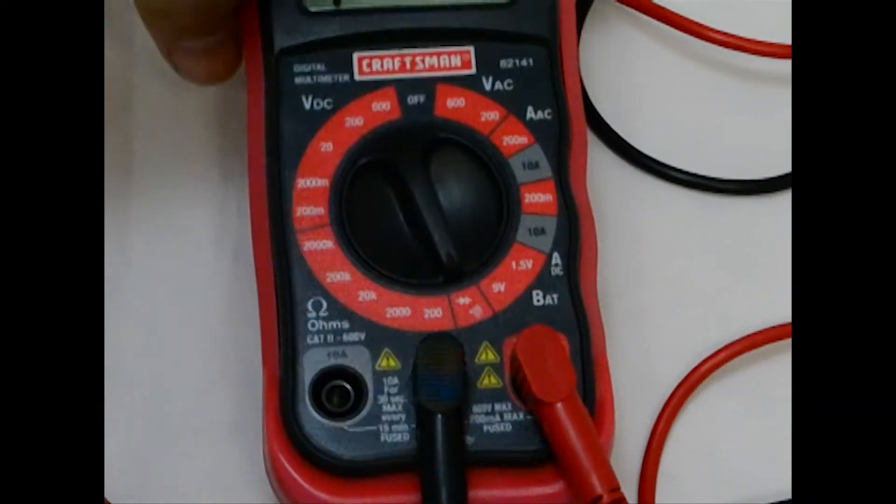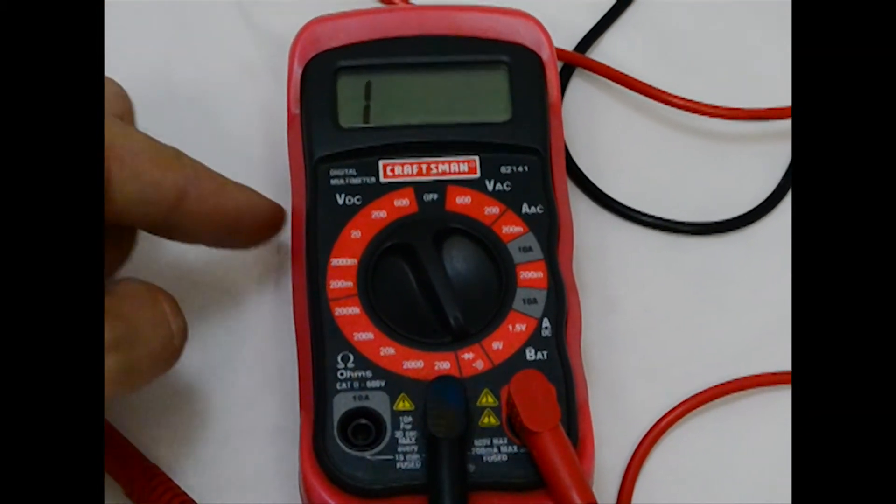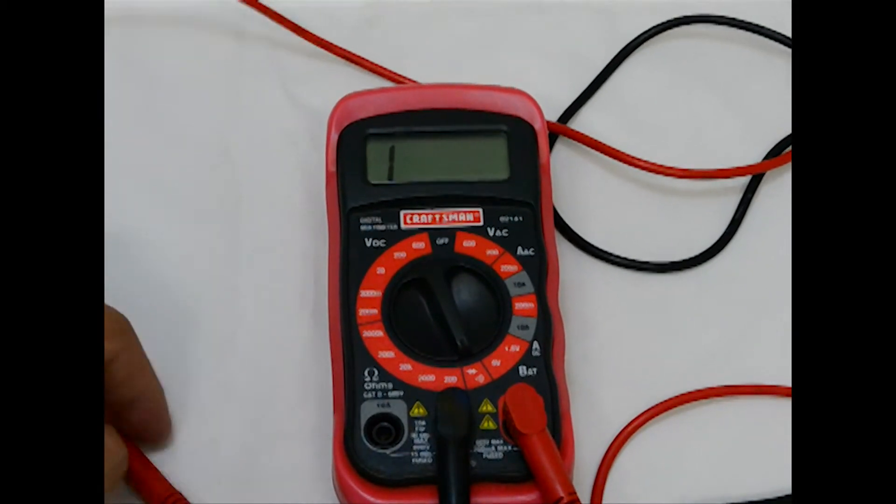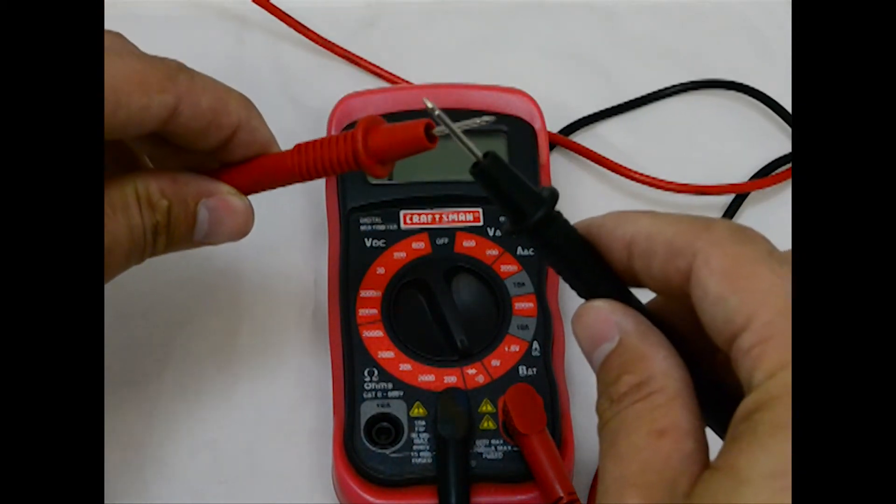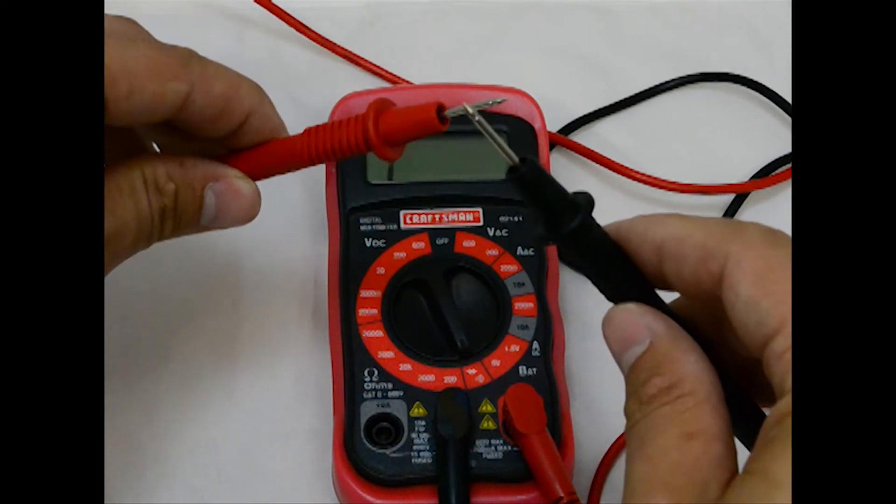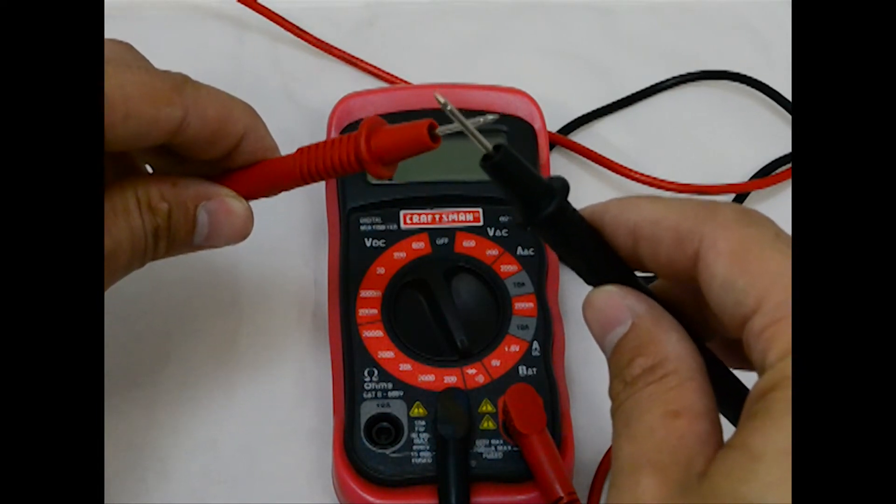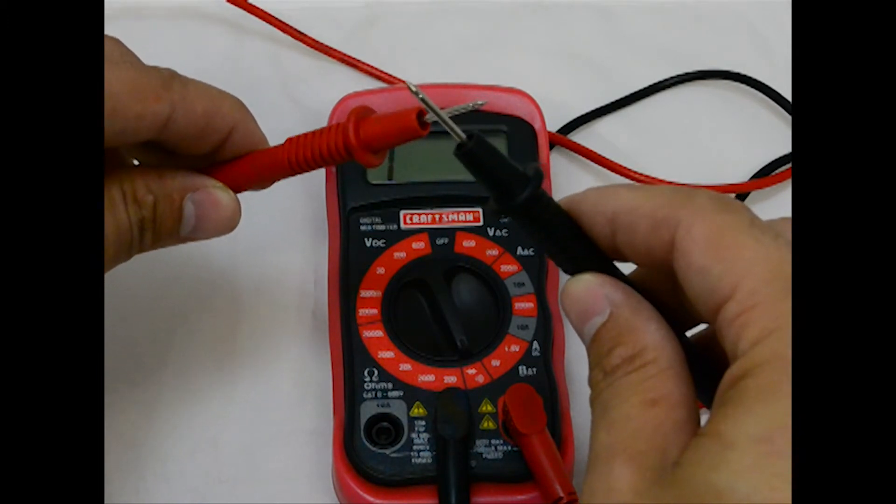You can see from the screen that the meter says one right now. That means that nothing is connected electrically, but I can test what my meter is going to do. It's either going to beep at me or say zero if I touch the two prongs.